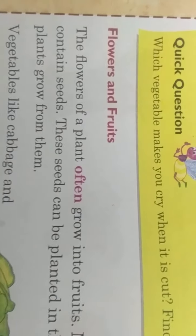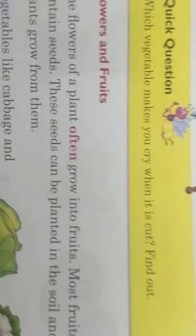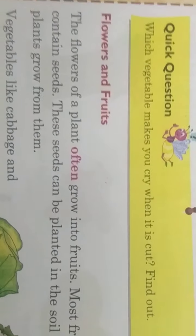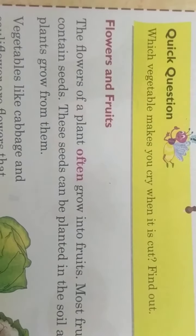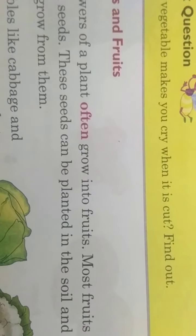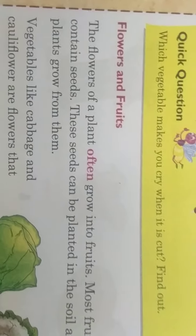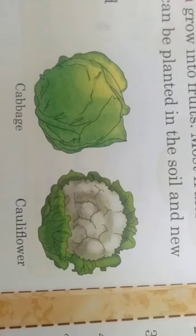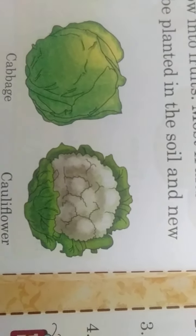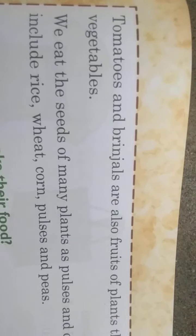Next is flower. The flower of a plant often grows into fruits. Most fruits contain seeds, and these seeds can be planted in the soil so new plants grow from them. Vegetables like cabbage (band gobi) and cauliflower (phool gobi) are plants we eat. Tomatoes and brinjal are also fruits.